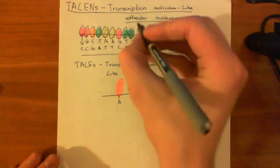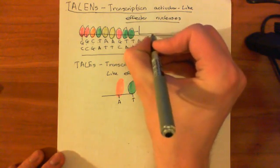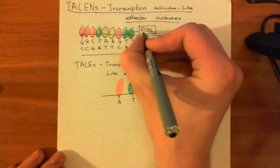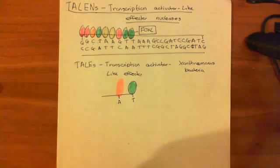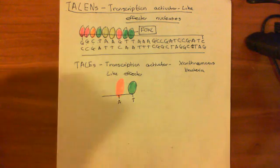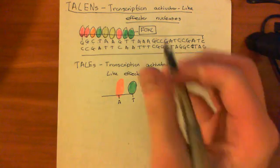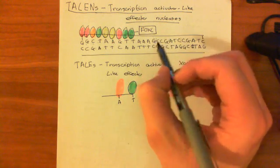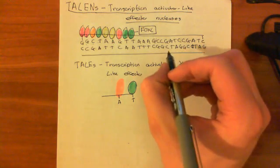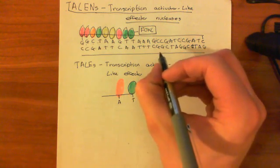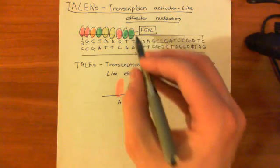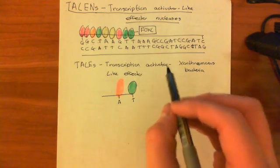What we then do is attach half of an endonuclease enzyme called FokI to this. FokI is a nuclease obtained from Flavobacterium. It is formed by two parts and only becomes active when the two parts dimerize to form an active endonuclease. You need both parts present in order to have an active enzyme.